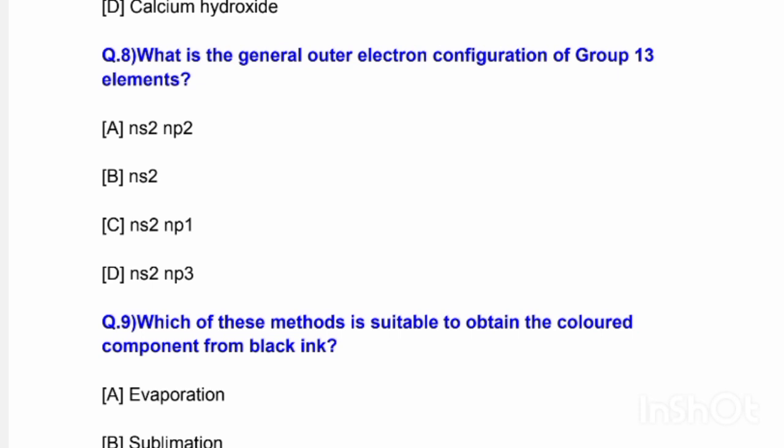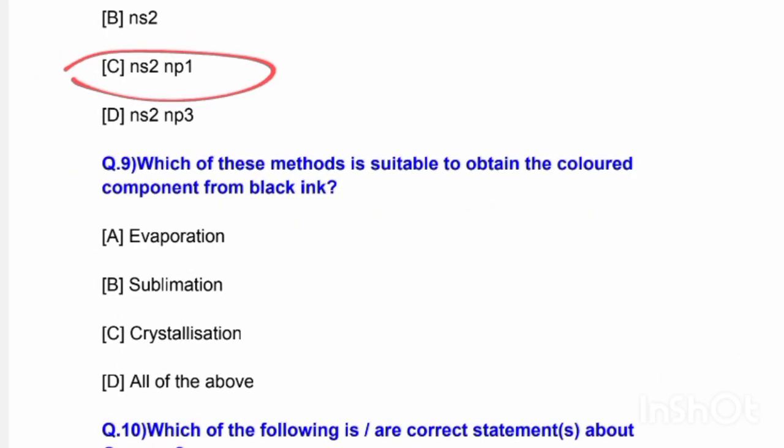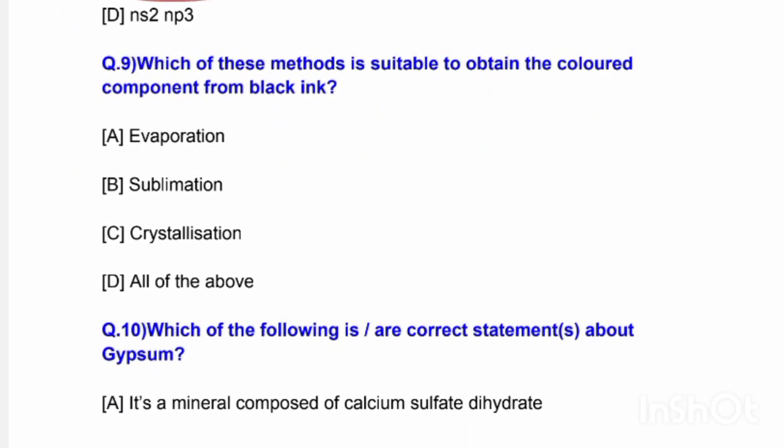Next question: What is the general outer electronic configuration of group 13 elements? Options are ns²p², ns², ns²p¹, and ns²p³. The correct answer is option C — ns²p¹. Next question: Which method is suitable to obtain the colored component from black ink? Options are evaporation, sublimation, or crystallization. The correct answer is option A — evaporation.